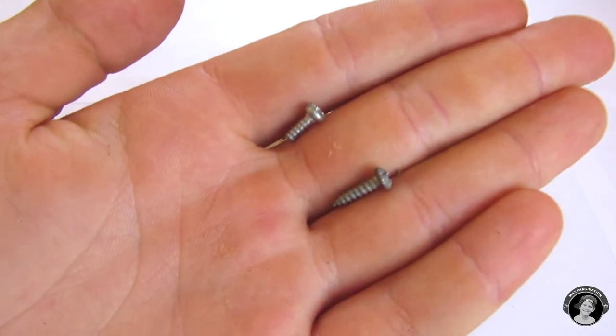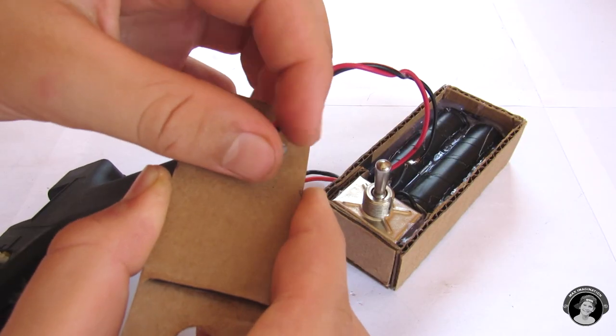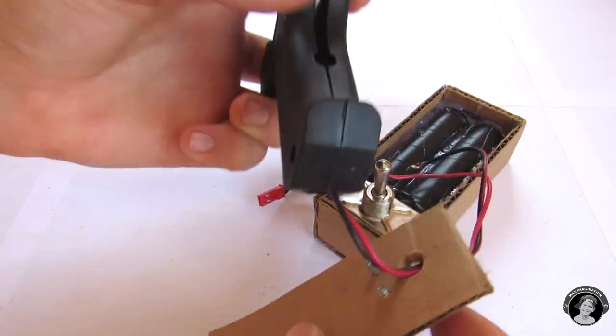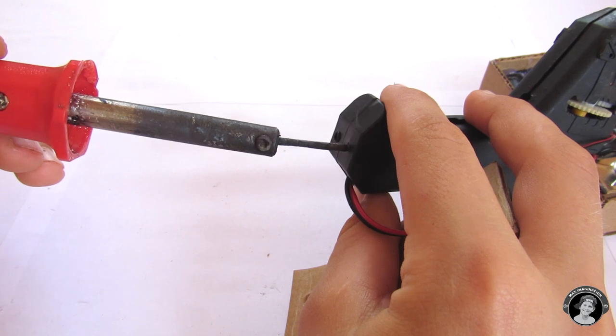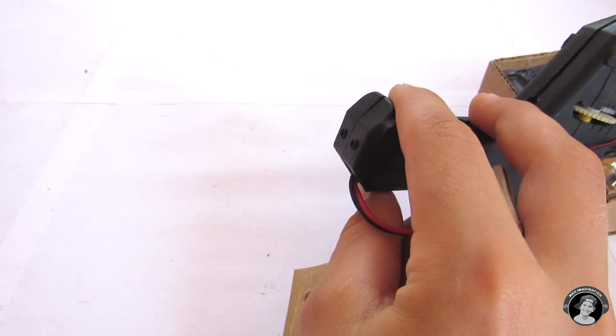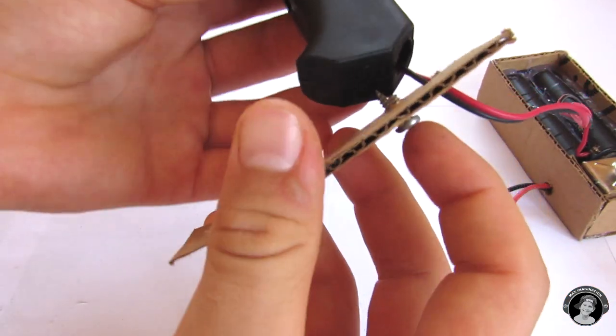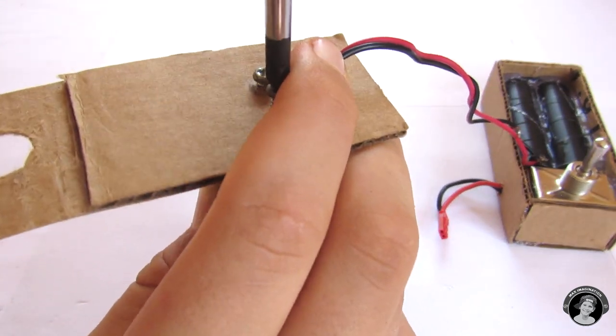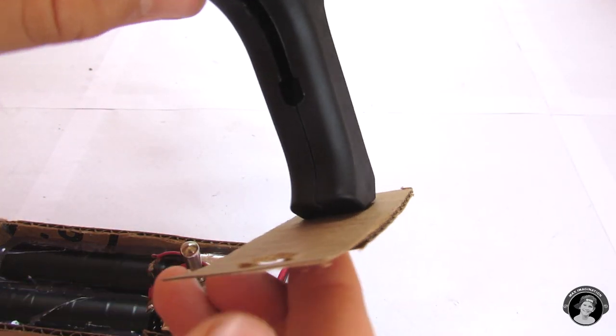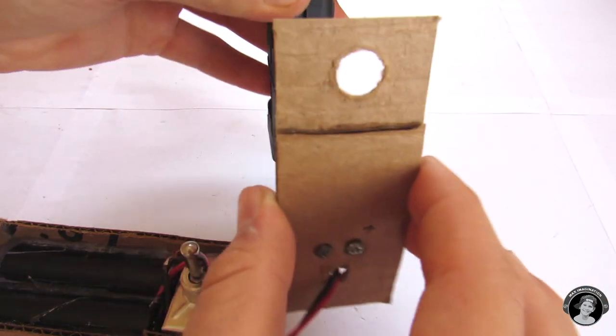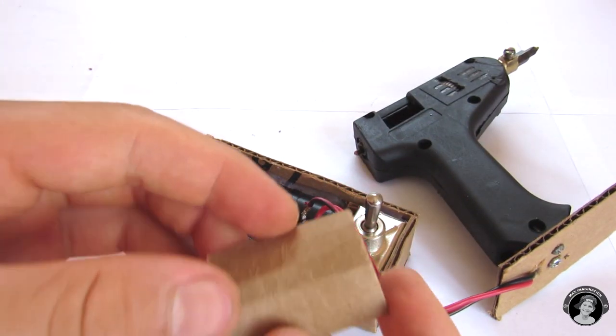So we're going to use screws for a stronger attachment between the hot glue gun and this piece of cardboard. We also have to have a place to slide in this connector.